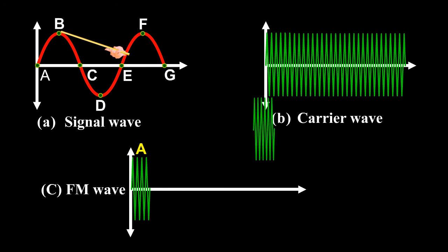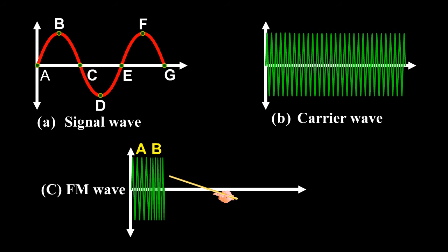the carrier frequency is increased to maximum as shown by closely spaced cycles. But during the negative peak of signal as at D, the carrier frequency is reduced to minimum as shown by widely spaced cycles.